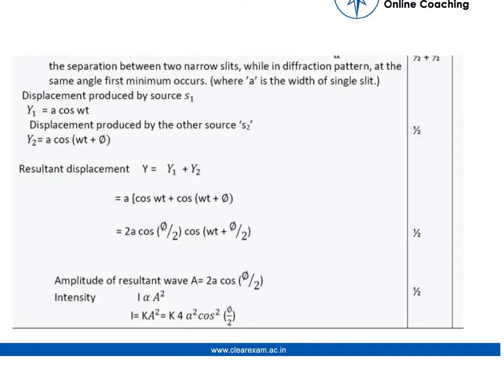The resultant displacement can be found by adding those two, which is A cos ωt plus cos (ωt + φ). By trigonometric formula, it becomes 2A cos (φ/2) times cos (ωt + φ/2). The amplitude of the resultant wave A equals 2A cos (φ/2). Intensity is directly proportional to amplitude squared, so it becomes I = KA² = 4Ka² cos² (φ/2).